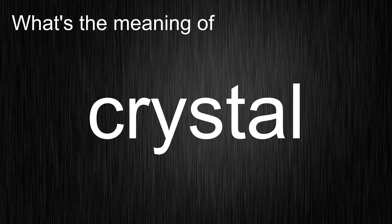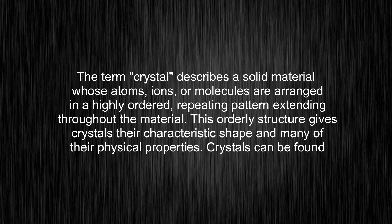What's the meaning of crystal? The term crystal describes a solid material whose atoms, ions, or molecules are arranged in a highly ordered, repeating pattern extending throughout the material. This orderly structure gives crystals their characteristic shape and many of their physical properties.